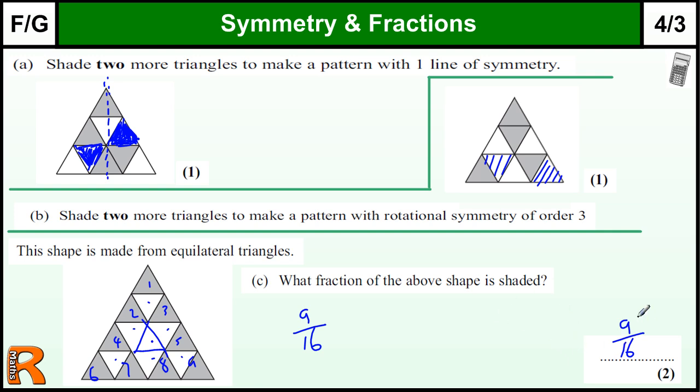That doesn't cancel down, so we just write nine out of sixteen. Now there is one mark if you have either the nine or the sixteen with certain conditions. If you've got the sixteen, the top number has to be less than sixteen, or if you've got the top number nine, the bottom number has to be bigger than nine. That gets one method mark, but to get both marks you need the nine and the sixteen.